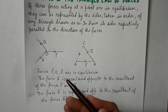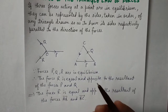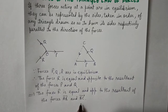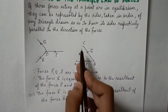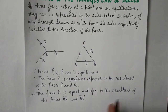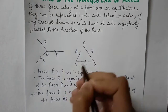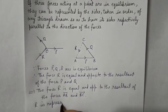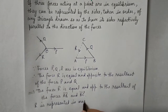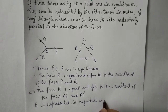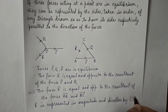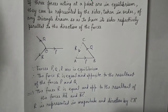So CA vector is equal and opposite to the resultant of forces AB and BC. We also have force R, which is equal and opposite to the resultant of forces AB and BC. Therefore, we can simply say that vector CA represents force R. So R is represented in magnitude and direction by vector CA.